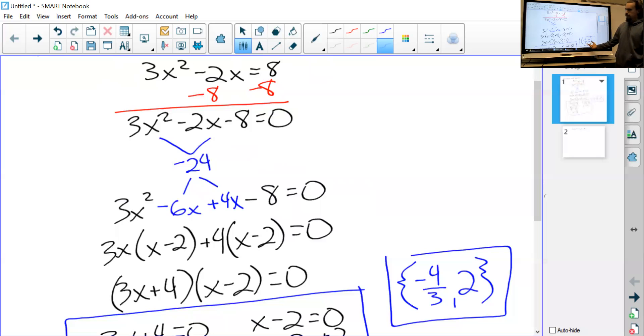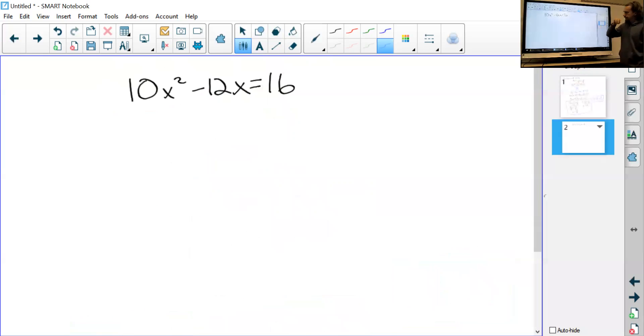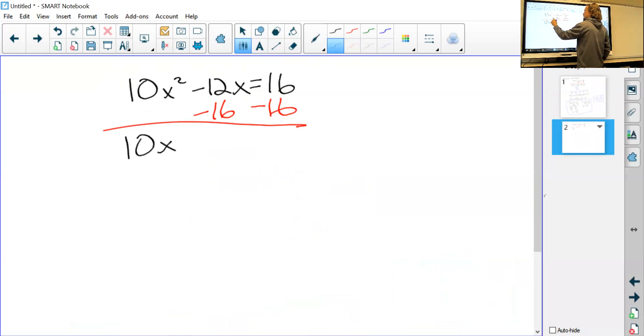Let's try one more—it's the second equation: 10x² - 12x = 16. Again, we start off, we move everything to the left-hand side. Minus 16, minus 16, and that gives us 10x² - 12x - 16 = 0.